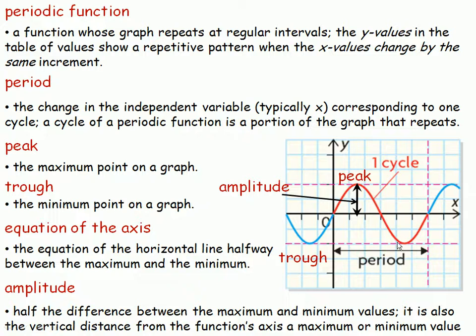For example, if we start at the origin here, that's one cycle. Now we don't have to start at the origin. We could start at, for example, a trough and go to another trough. That's still one period. So it's a length horizontally on the x, usually x-axis, but whatever variable is on the horizontal axis. That's the length of the period.